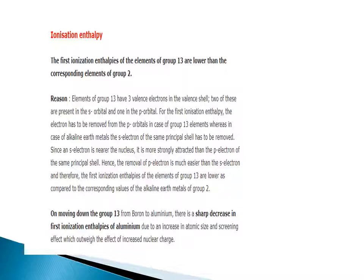Ionization enthalpy. The first ionization enthalpies of the elements of group 13 are lower than corresponding elements of group 2. Elements of group 13 have three valence electrons: two in s-orbitals and one in p-orbital. For the first ionization enthalpy, the electron is removed from the p-orbital in group 13, whereas in alkaline earth metals, the s-electron of the same principal shell is removed. Since an s-electron is nearer the nucleus and more strongly attracted, the removal of a p-electron is much easier, and therefore the first ionization enthalpy of group 13 elements is lower than that of group 2.